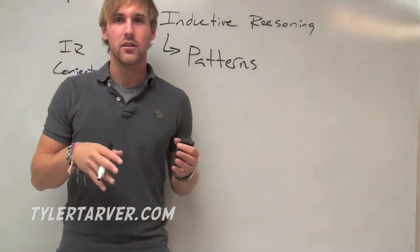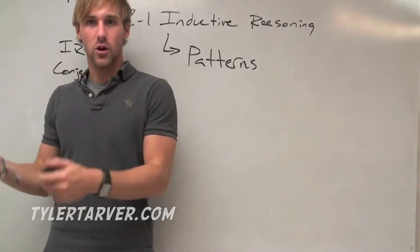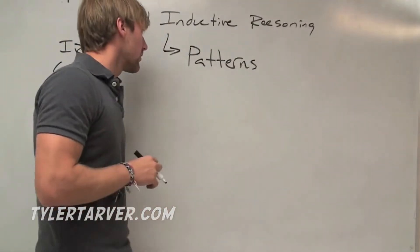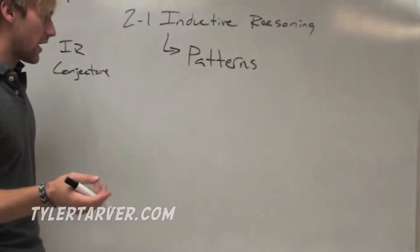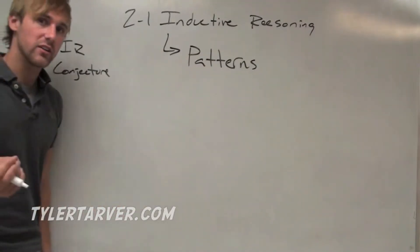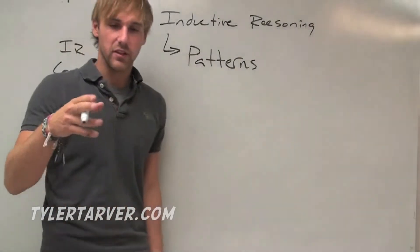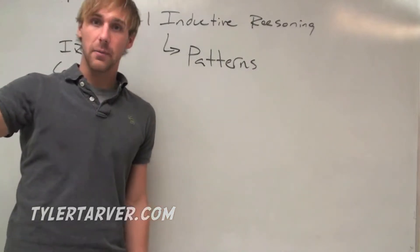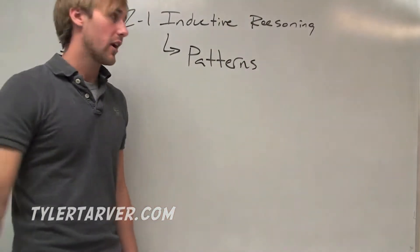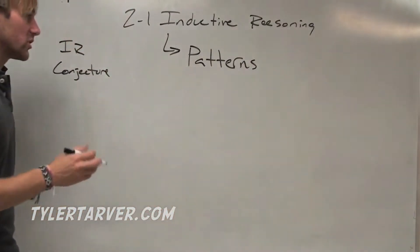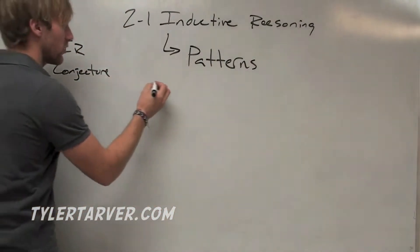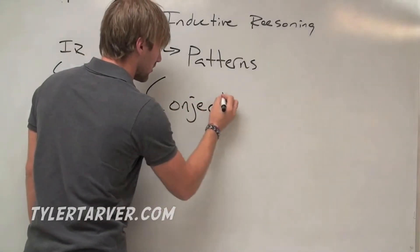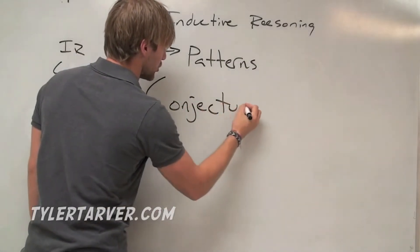You look at what has happened to find out what's going to happen. So we know inductive reasoning as patterns — it's whenever we look at something that's continued over an amount of time and we assume what's going to happen next. What you assume to be true is called a conjecture.